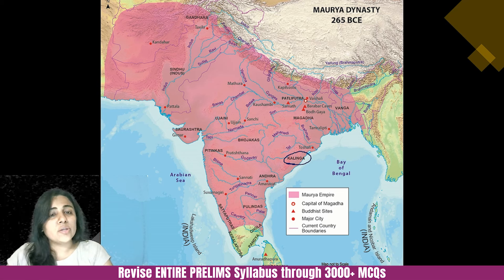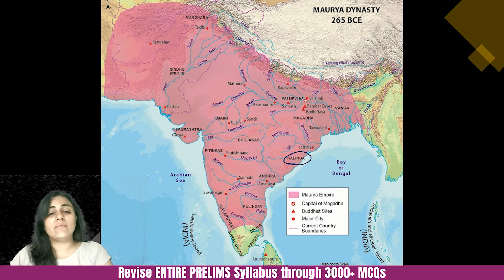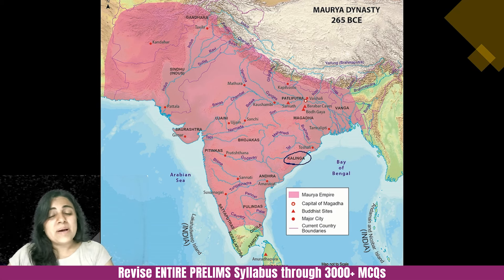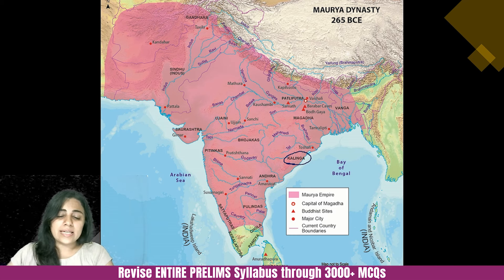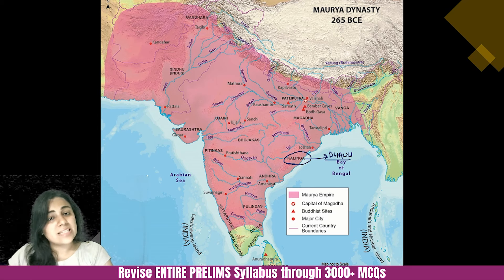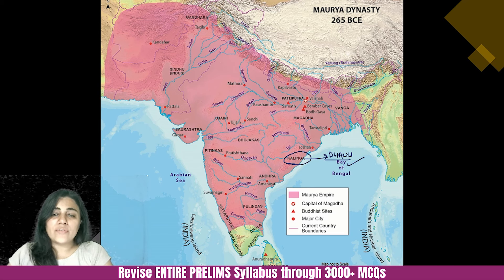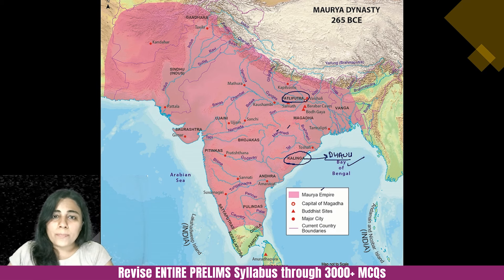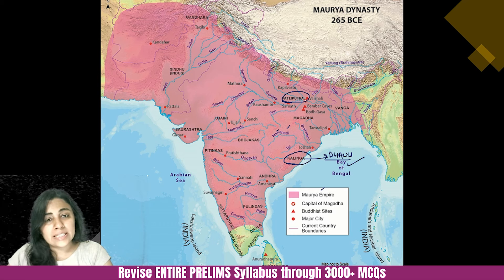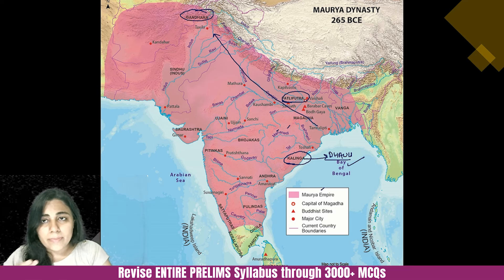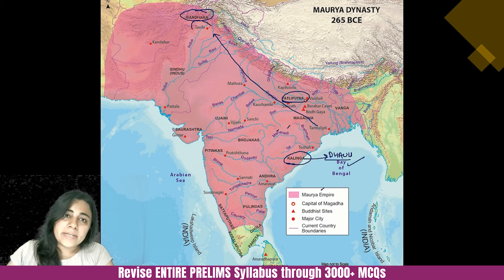Dhauli is the capital of Kalinga — you may have heard of the Dhauli elephant, which has been asked in UPSC examinations. Then there is Pataliputra, the primary capital. Going along the Uttarapath toward Gandhara, the capital of the northern province was Takshashila. The Dakshinapath goes southward — Chandragupta Maurya traced this path when he went to South India, and the capital of the Deccan province is Suvarnagiri. Do not confuse Suvarnagiri with Shravanabelagola — Shravanabelagola is where Chandragupta went with Bhadrabahu to establish the Digambara sect, but Suvarnagiri is the administrative capital of the southern province.